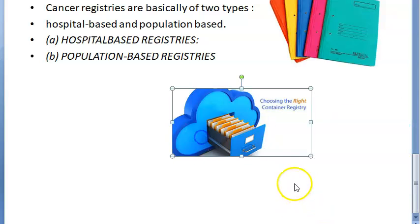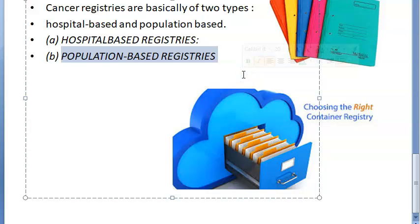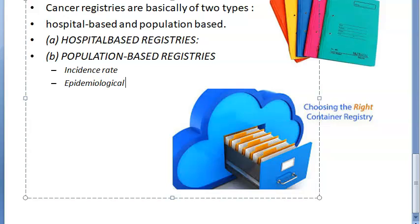Population-based registries cover the complete cancer situation in a geographic area. Even if the population is 2 to 7 million, you will know the information. It will give you the incidence rate. It is also a useful tool for initiating epidemiological inquiries into the cause of cancer — including cause, time trends, surveillance, planning, and evaluation of operational activities.